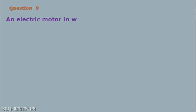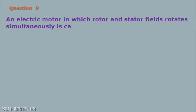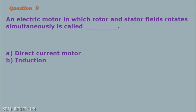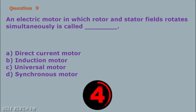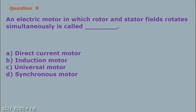Question number 9: An electric motor in which rotor and stator fields rotate simultaneously is called: A. Direct current motor B. Induction motor C. Universal motor D. Synchronous motor. The correct answer is letter D, synchronous motor.